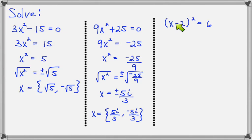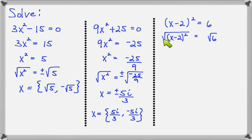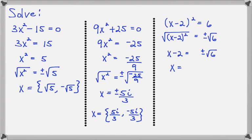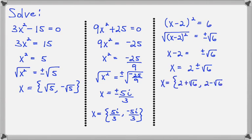This next problem looks a little different. Instead of just x squared, I have a binomial squared. Notice that this squared binomial is all by itself on one side, so it's already set up for the square root property. Taking the square root of both sides, the square root of a square just gives what's inside the parentheses. The right side is plus or minus the square root of 6. Now I isolate x by adding 2 to both sides. So my two answers are 2 plus the square root of 6 and 2 minus the square root of 6.